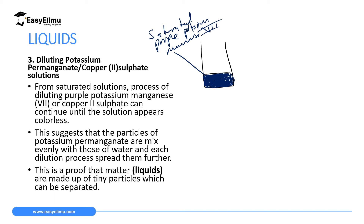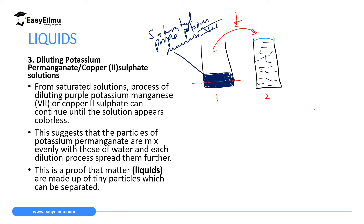Now, divide the saturated solution — take half of it and put it into beaker 2, where it will occupy a small volume. Then add water to the brim of beaker 2. You will realize there is a purple color from the potassium manganate 7 distributed all through, mixed with the color of the water. So the purple color will fade — it will not be as intense as when it was saturated.